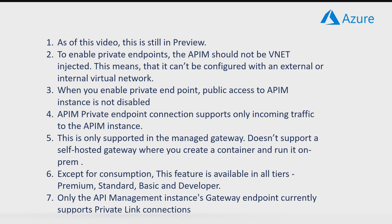A couple of important points to note. As of this video, this feature is still in preview. To enable the private endpoints, APIM should not be VNet injected — this means it can't be configured with external or internal mode at the same time. It has to be either external, internal, or have private endpoints enabled. We can't mix these options as of this preview.